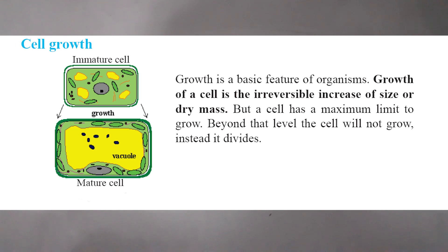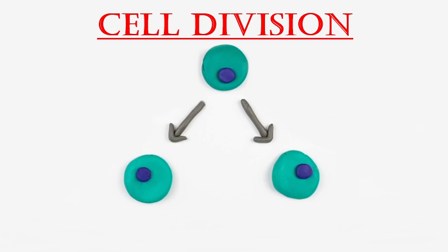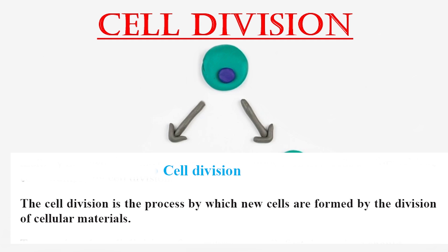Let's talk about cell division. Every cell has the ability to grow and multiply its number. As humans, we also start from one cell, and that one cell is divided up to more than a hundred trillion cells when we become an adult. Cell division is the process by which new cells are formed by the division of cellular materials.